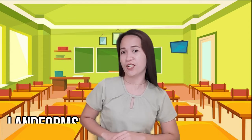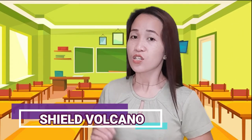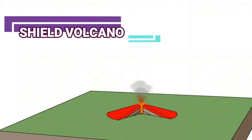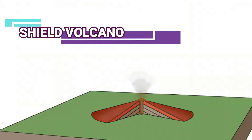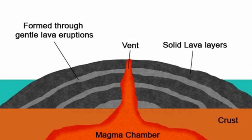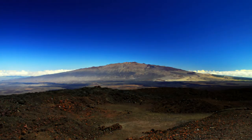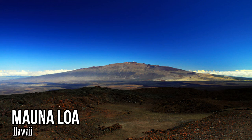Volcanoes come in different shapes and sizes, and each structure has a unique history of eruption. Volcanologists have been able to classify them according to their landforms and eruptive patterns. The first type is the shield volcano. This is formed by the accumulation of lava that oozes out from the volcano. Since non-explosive lava flows freely, a broad, slightly domed structure that resembles a warrior's shield is formed — that is why it is called a shield volcano. An example is Mauna Loa in Hawaii.